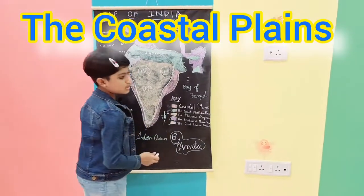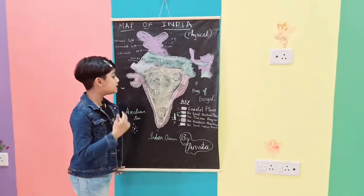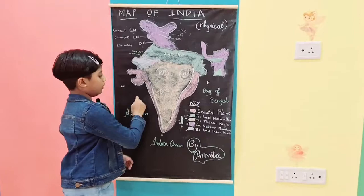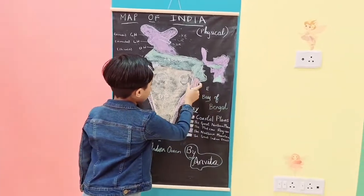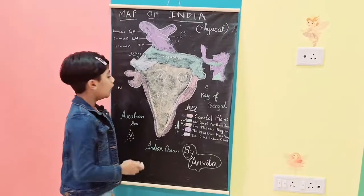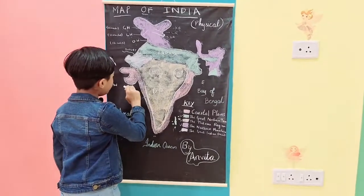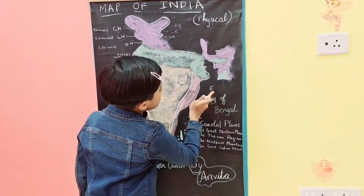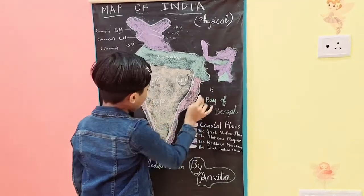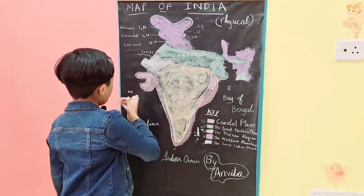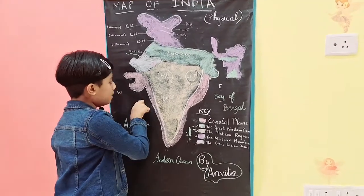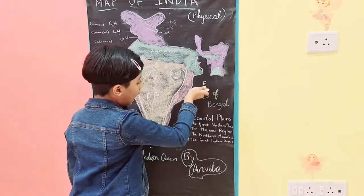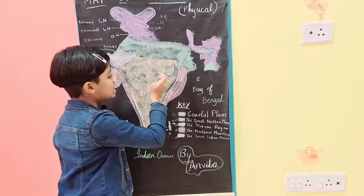Now let's go to the Coastal Plains. There are two coastal plains in India: the Western Coastal Plains and the Eastern Coastal Plains. The Western Coastal Plains is narrower, whereas the Eastern Coastal Plains is broader. The Western Coastal Plains stretch from the Rann of Kutch in the north to Kanyakumari in the south, and lie between the Arabian Sea and the Western Ghats. The Eastern Coastal Plains lie between the Bay of Bengal and the Eastern Ghats.